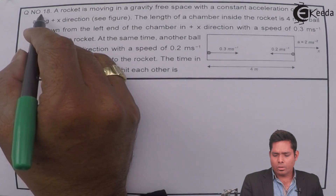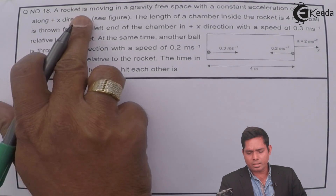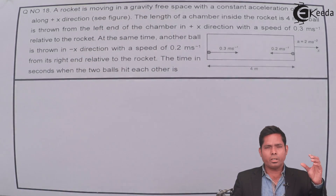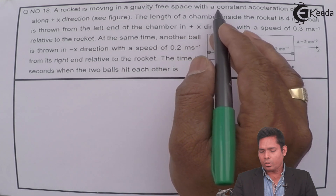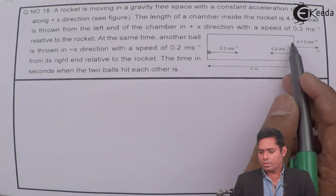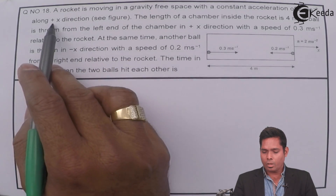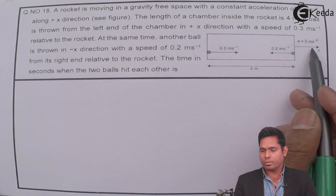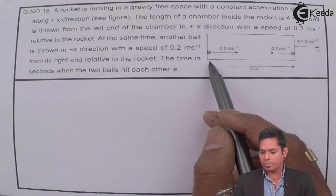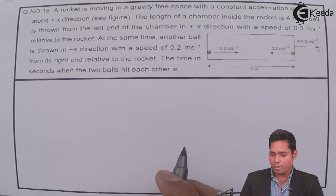The question is: a rocket is moving in a gravity-free space with a constant acceleration of 2 meter per second square along the positive x direction. The length of the chamber inside the rocket is 4 meter.